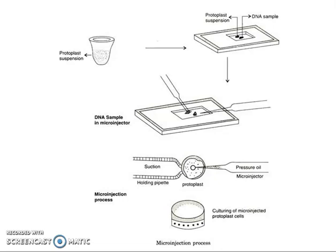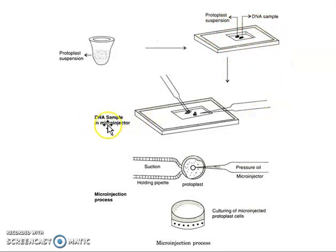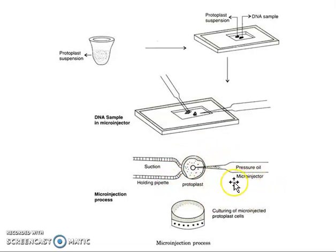Here you can see a diagrammatic representation of how DNA is inserted into a protoplast with the help of micro injection. We have a protoplast suspension solution, from which we take the protoplast and fix it on a slide. The DNA sample is then micro injected. You can see the holding pipette applying suction or vacuum pressure to hold the protoplast, and with the help of a micro injector — a small needle like a syringe — we add our DNA into the protoplast. Once the DNA is entered, we culture the protoplast to see whether it has the desired character.